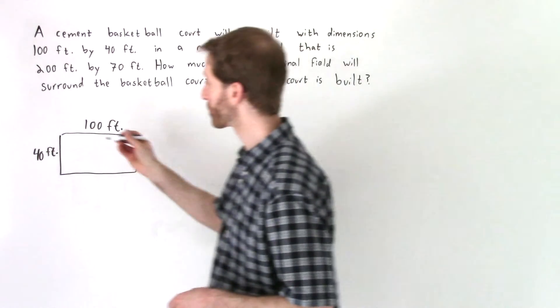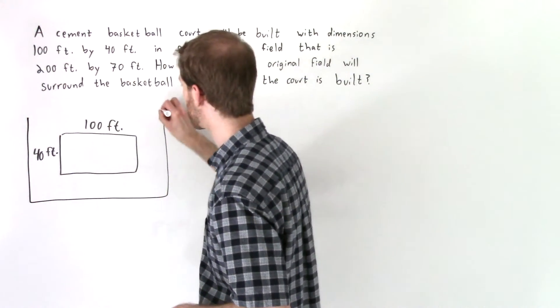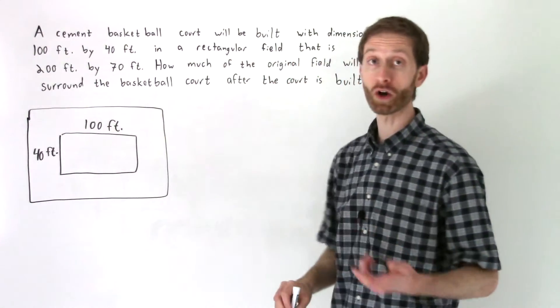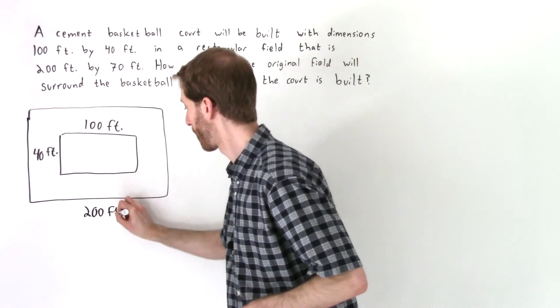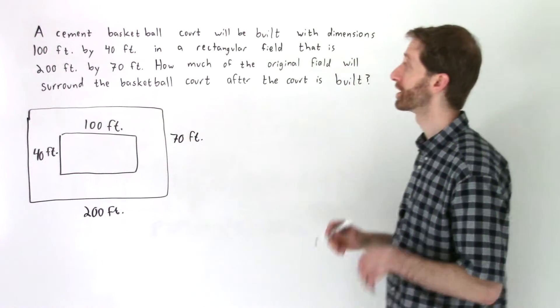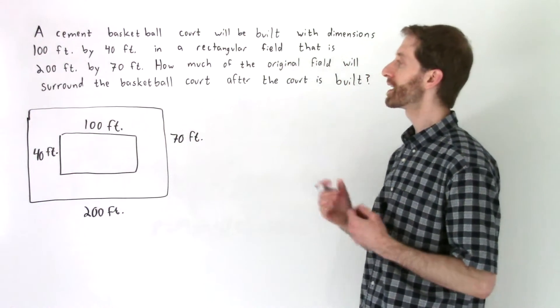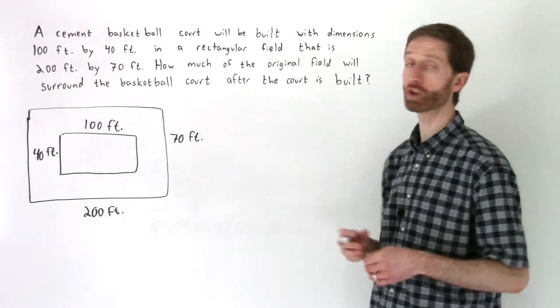Then it says it'll be built in a rectangular field that is 200 feet by 70 feet. So it's going to be built within a bigger rectangular field like that, 200 feet by 70 feet. Now what we've done is we basically translated that whole first sentence. It then says how much of the original field will surround the basketball court after the court is built.